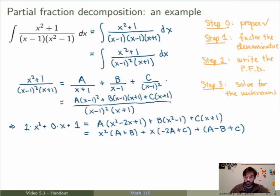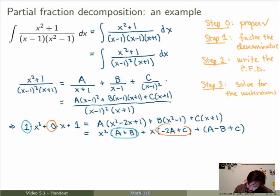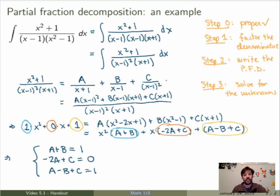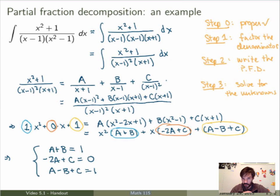Since the two sides must be equal for all x, each coefficient must match. The left-hand side numerator is x squared plus 0x plus 1. Equating coefficients gives the system: A plus B equals 1; minus 2A plus C equals 0; A minus B plus C equals 1. This is the system of three equations for three unknowns. By the way, in class I'll show a faster method for solving for the unknowns, but equating coefficients after putting things on a common denominator always works as a fail-proof approach.